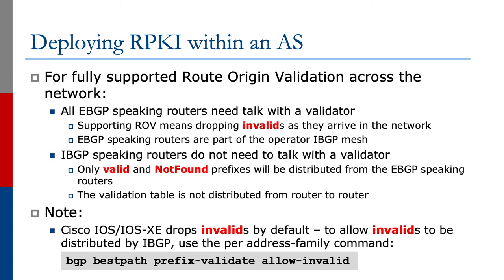There's no protocol for distributing this table from one router to another. But do note, on Cisco IOS and IOS XE, the routers will drop invalids by default. If you want to allow invalids to be distributed by iBGP, there is the per address family command bgp best path prefix validate allow invalid. With this implemented, IOS and IOS XE will not drop invalids by default, but distribute them across the IBGP mesh.